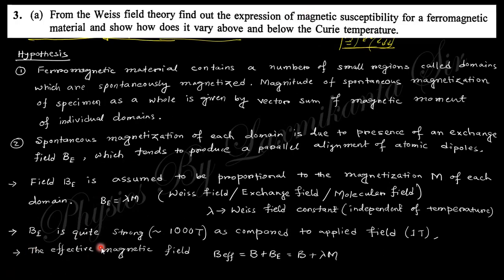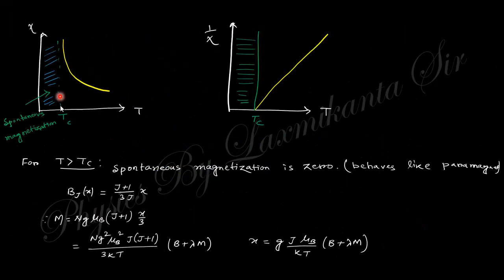Below and above Curie temperature, how this varies. You can see below Curie temperature spontaneous magnetization occurs, above Curie temperature spontaneous magnetization is absent. Actually the ferromagnetic changes into paramagnetic above the Curie temperature. So this is the answer.